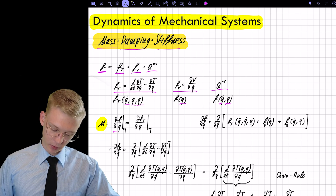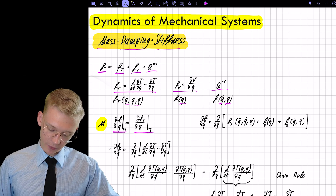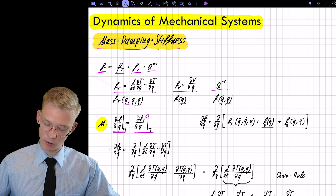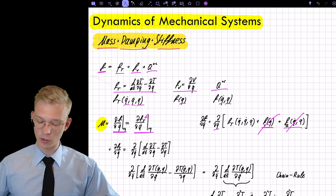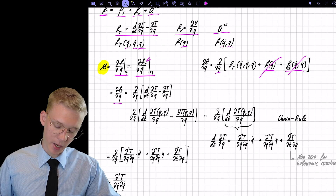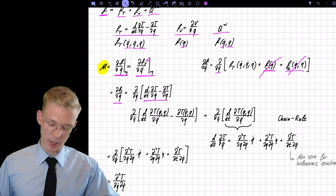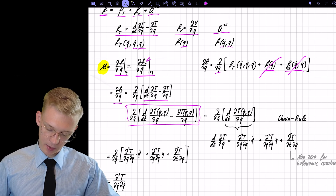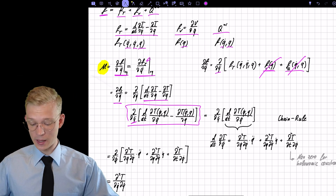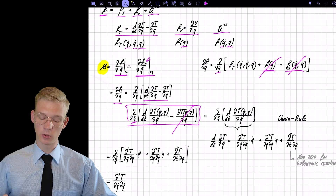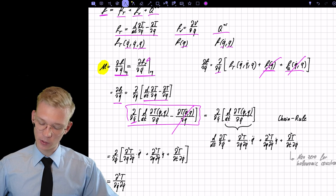If we partially derive with q-double-dot, we only have to look at the part with the kinetic energy, because the potential energy is not a function of q-double-dot, and the non-conservative forces are also not a function of q-double-dot. So we only look at the kinetic energy. If we expand that term we are left with that expression, and we see that the second part is not a function of q-double-dot, so this is gone — we only have to look at the first part.